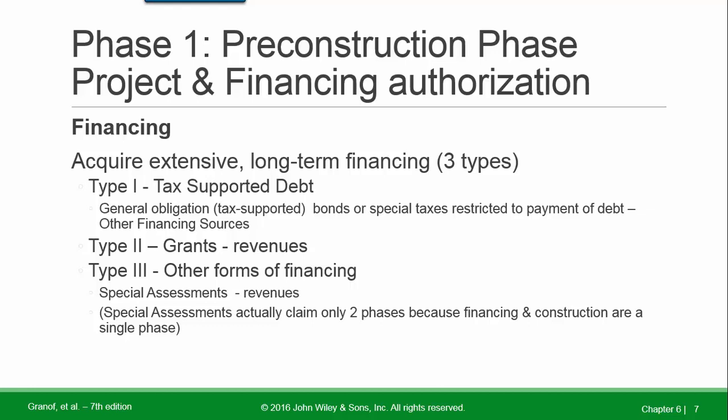There are three types of long-term financing. Type one: tax-supported debt — general obligation bonds or special taxes restricted to the payment of debt; these are other financing sources. Type two: grants — these are revenues. Type three: other forms of financing — special assessments or revenues.